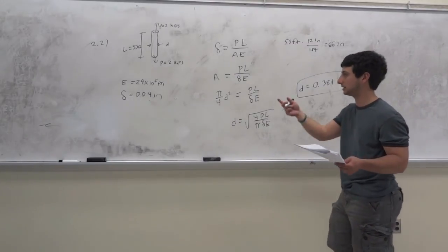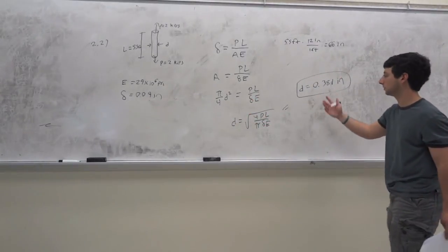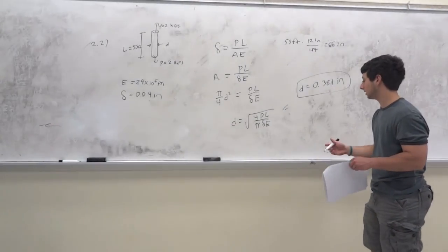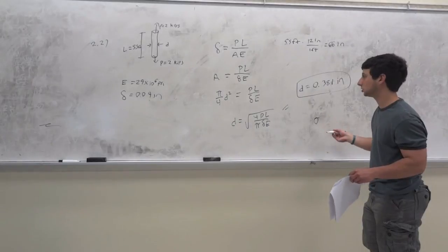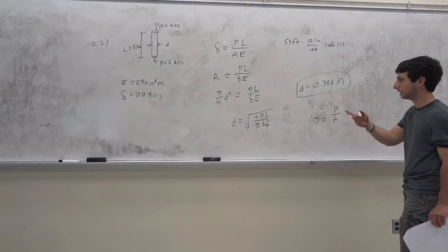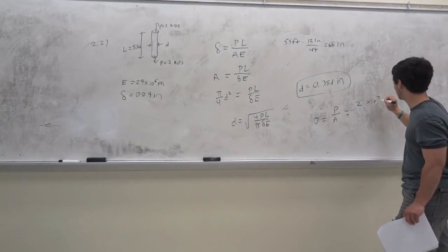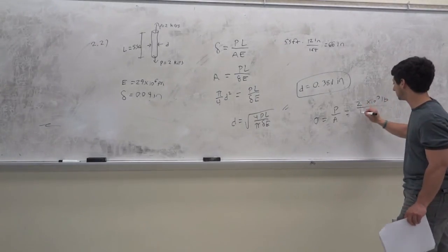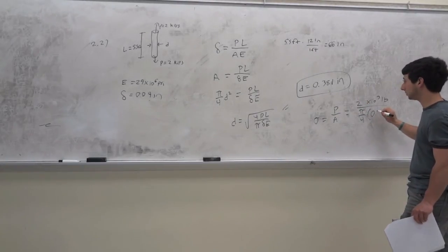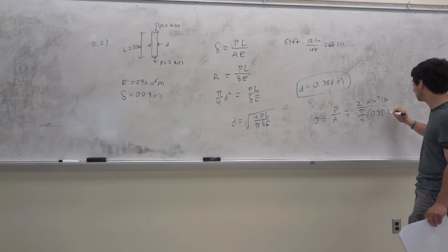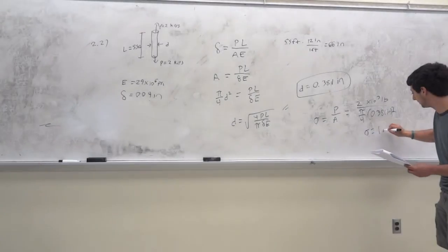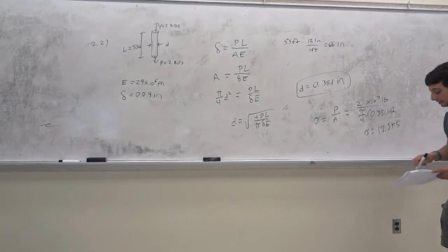For the second part they want to know the stress. The stress is just force over area: sigma equals P over A. So it's 2 times 10³ pounds over pi over 4 times (0.381 inches) squared, giving sigma equal to 17.5 psi.